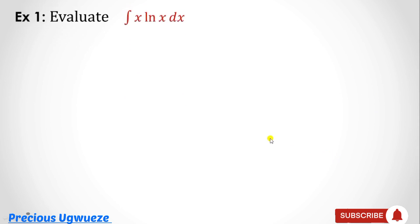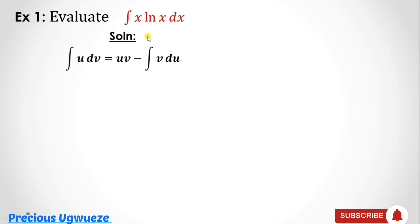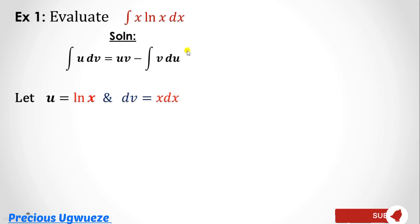Here we have: evaluate ∫x·ln(x)dx. This is a product, and we always state our formula first. From this formula we decide which part will be our u and which will be our dv. There is a condition for making this choice.